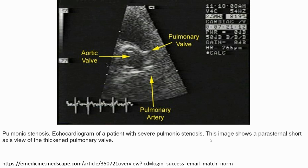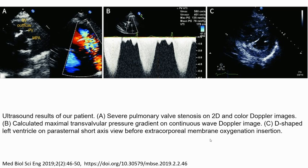This is also a case of pulmonary stenosis. The image shows severe pulmonary valve stenosis on 2D and color flow imaging, with calculated maximum trans-valvular pressure gradient on continuous wave flow imaging, and a CD shape of the right ventricle on parasternal short-axis view before extracorporeal membrane oxygenation insertion.